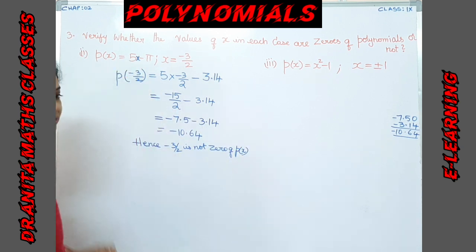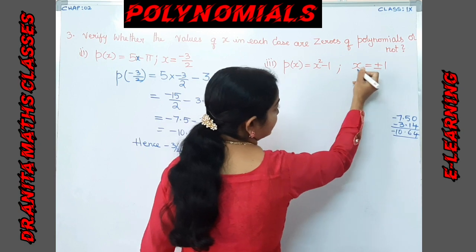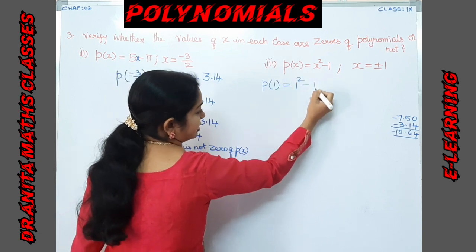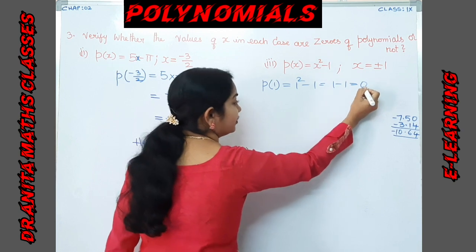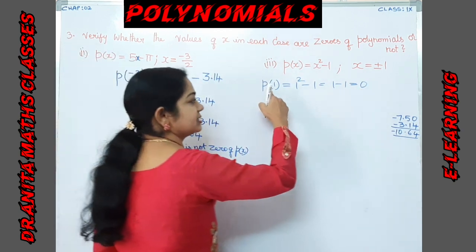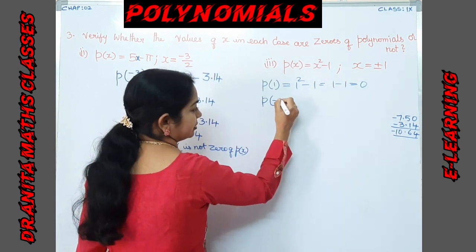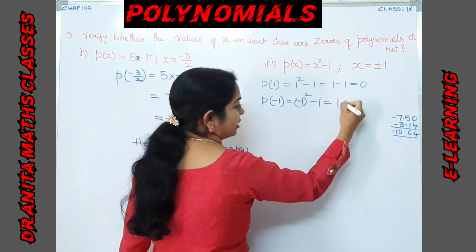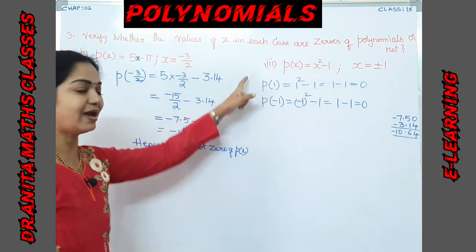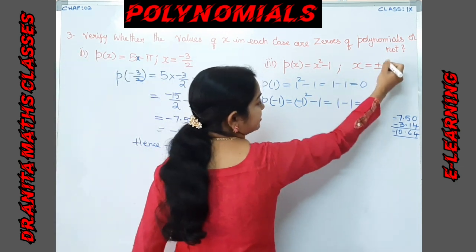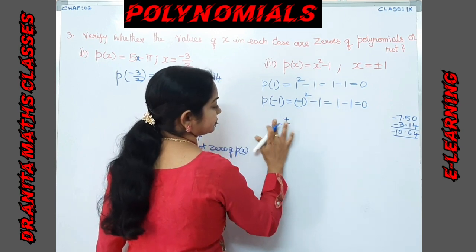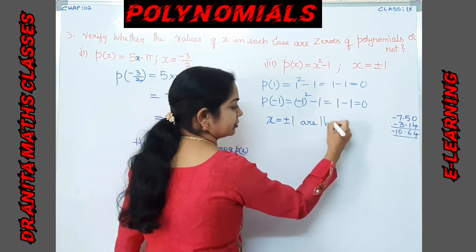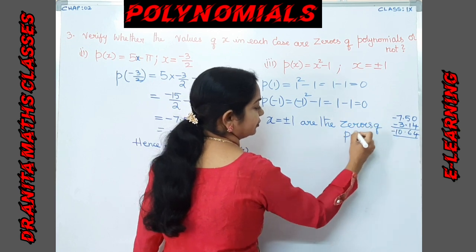For the third part, x = +1 and x = -1. Checking x = 1: 1² - 1 = 1 - 1 = 0. We got 0, so 1 is a zero of the polynomial. Checking x = -1: (-1)² - 1 = 1 - 1 = 0. Again we get 0. Therefore, x = ±1 are both zeros of the polynomial.